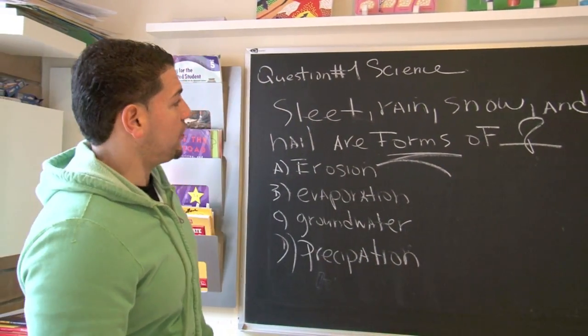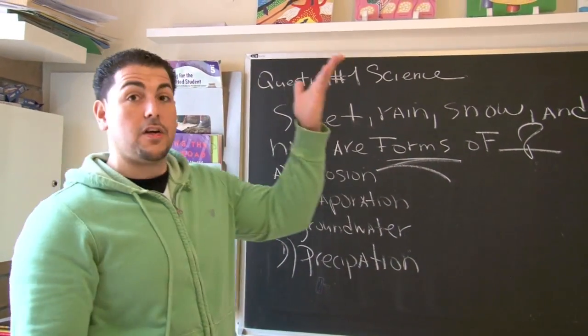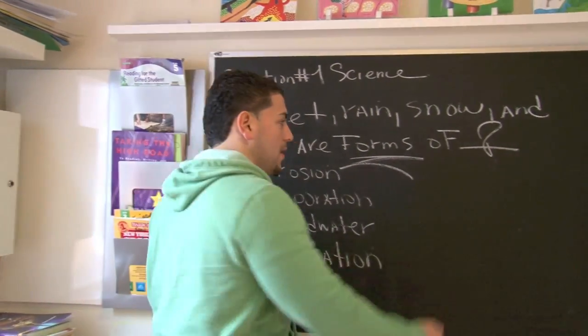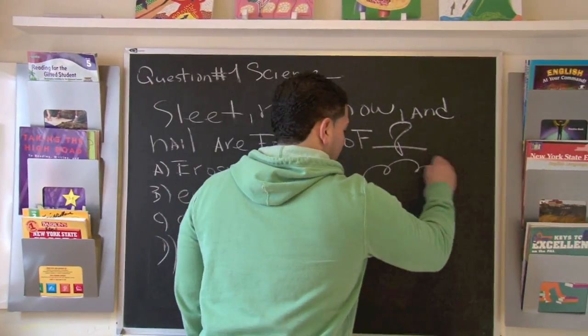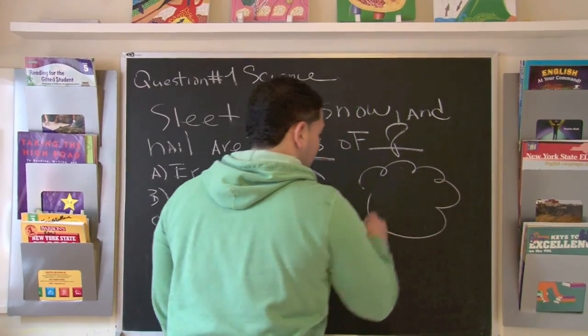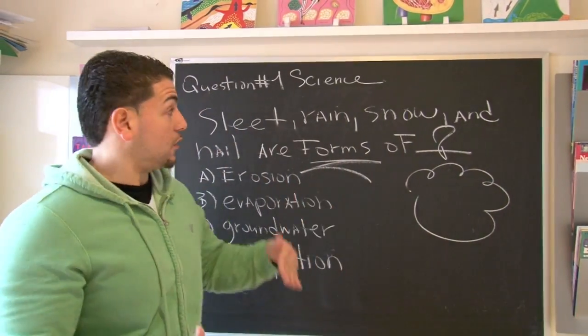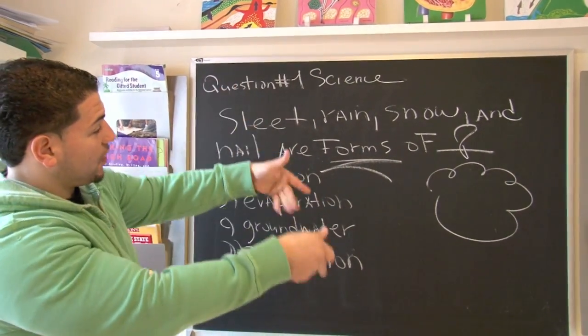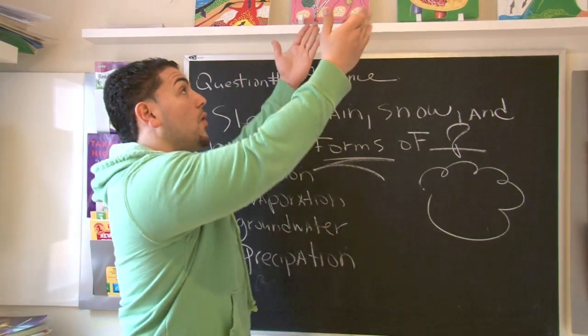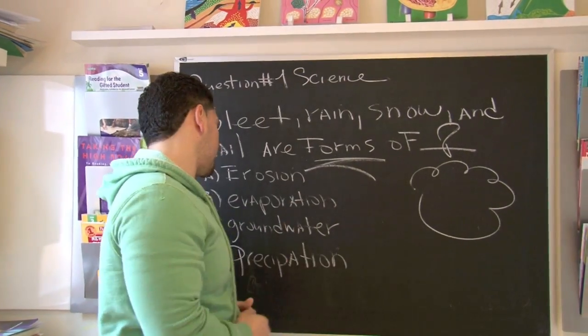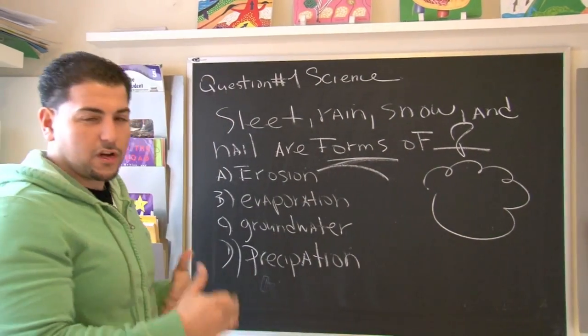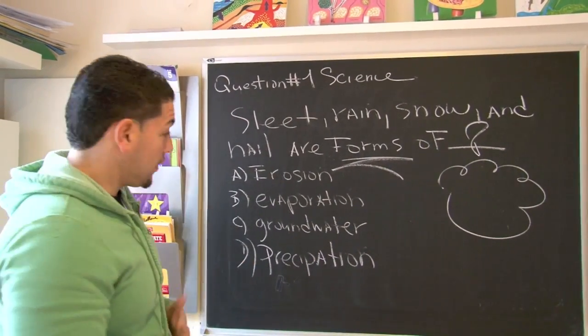Well, looking at the question right away, the first thing that comes to our mind is the cloud. The cloud symbolizes the sky, because we know that sleet, rain, snow, and hail all come from the sky. So let's look at our choices.